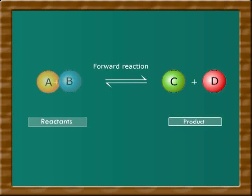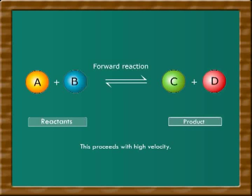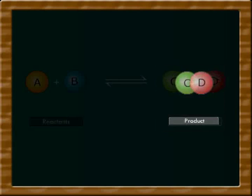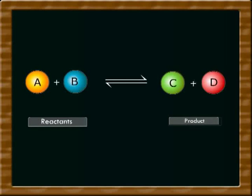In a forward reaction, A reacts with B to form product C and D. This proceeds with high velocity. After the formation of the product C and D, they react to form reactants. This is known as backward reaction.